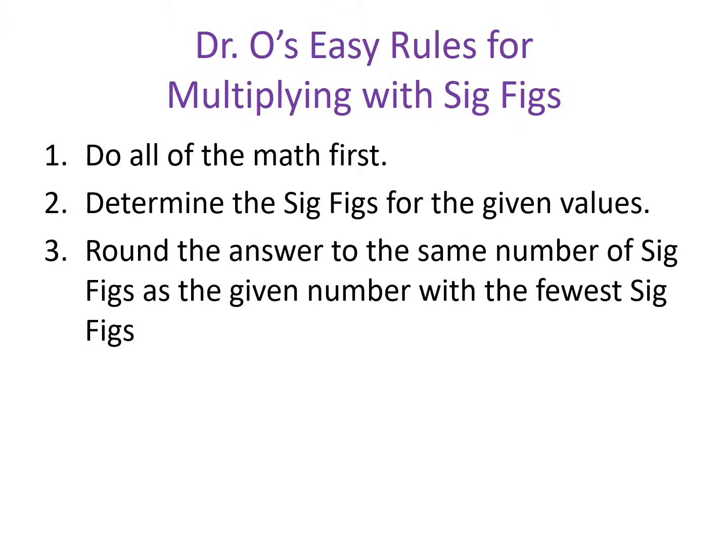Rule number three says that we round our answer to the same number of significant figures as the given number with the fewest significant figures. Whichever of our given values has the least number of significant figures, our solution should reflect that number of significant figures as well. Now let's look at some examples.